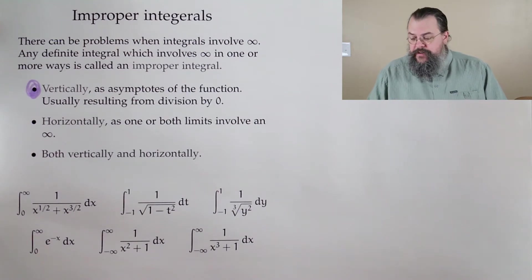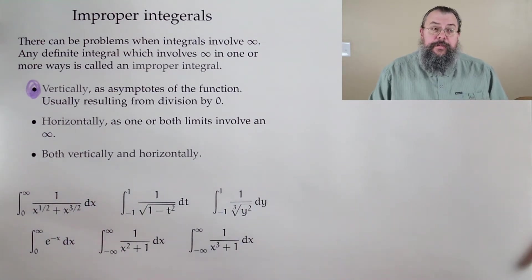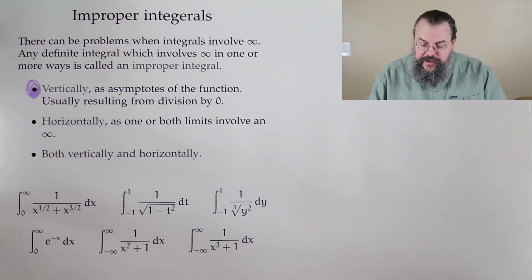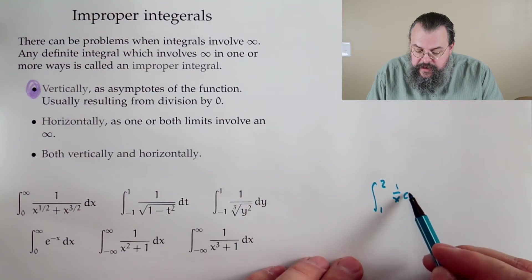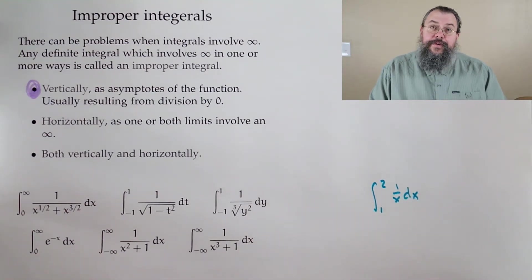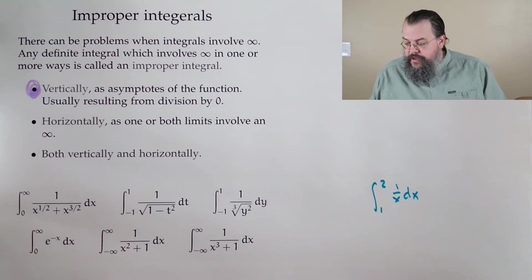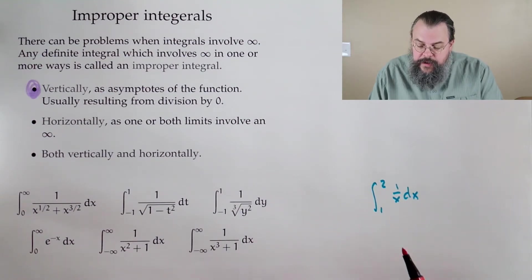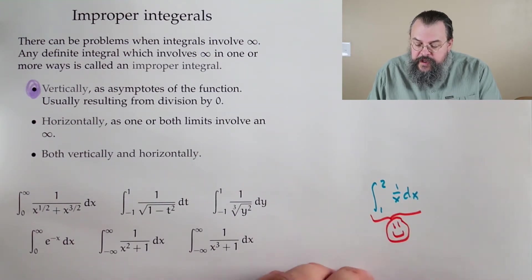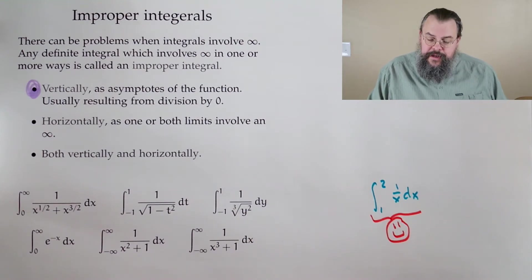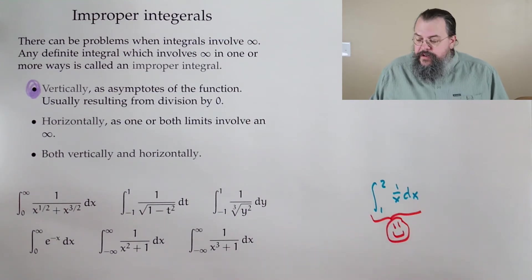When we talk about integrals or improper, we always mean definite integrals. As an example, the integral 1 to 2 of 1 over x dx - is this an improper integral? The answer is no. This is perfectly fine. The function 1 over x does blow up, but not in the place we care about. 1 over x blows up at 0, not between 1 and 2.